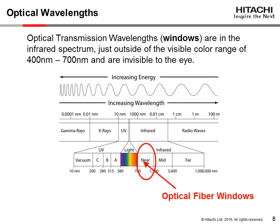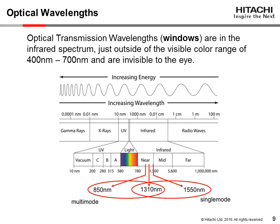We will now discuss optical transmission wavelengths. The communications industry has standardized a range of wavelengths that efficiently transmit through an optical fiber. Common optical transmission wavelengths are referred to as windows. These windows exist in the infrared spectrum just outside of the visible color range of 400 nanometers to 700 nanometers and are invisible to the eye.